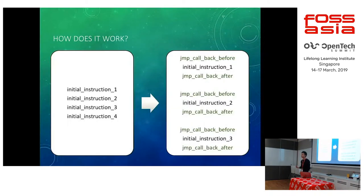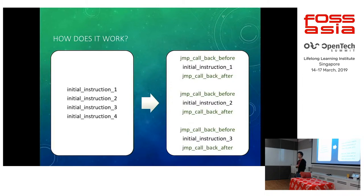To illustrate this better, on your right is basically the instructions you will see when running the application on a CPU — there are one, two, three, four instructions. If you do some instrumentation, you would be able to modify the application behavior by adding additional instructions before and after, and even removing certain instructions.